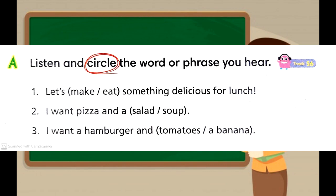Section A — listen and circle the word or phrase you hear. One: 'Let's make something delicious for lunch.' Two: 'I want pizza and a salad.' Three: 'I want a hamburger and a banana.'